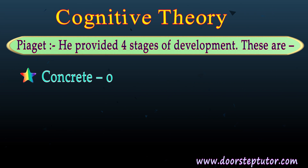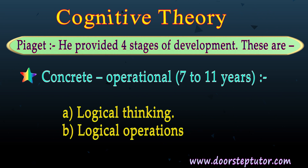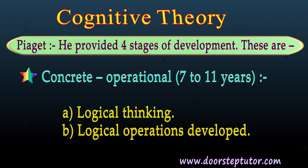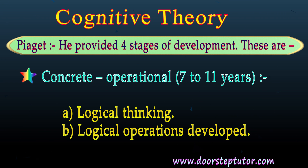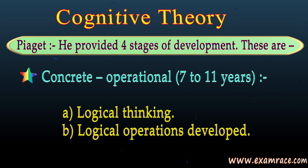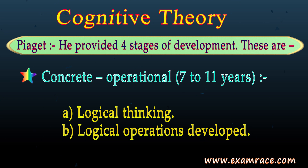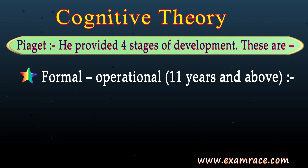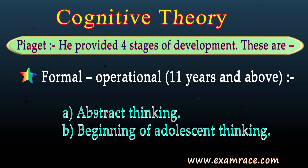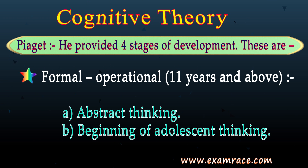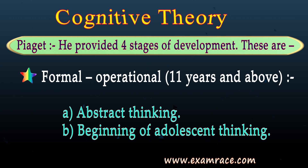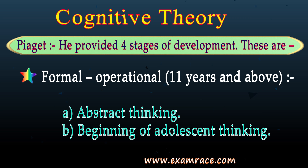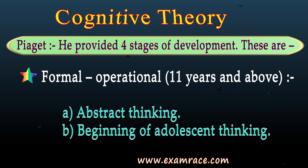The third stage is concrete operational, from 7 to 11 years. This stage is differentiated from the pre-operational stage in terms of the development of logical thinking in children. The fourth stage is the formal operational stage, from age 11 and above, characterized by abstract thinking and the beginning of adolescent thinking, unlike earlier stages where the child's thinking was governed by concrete objects.